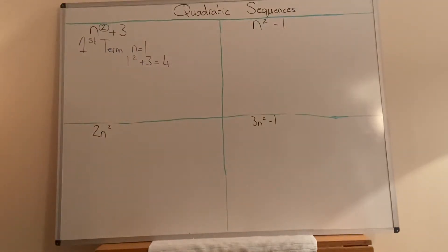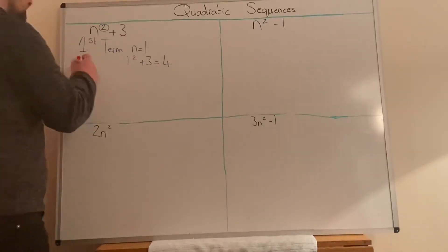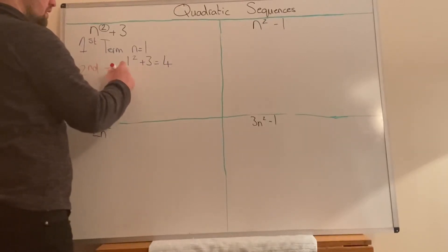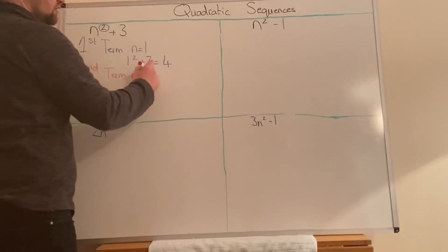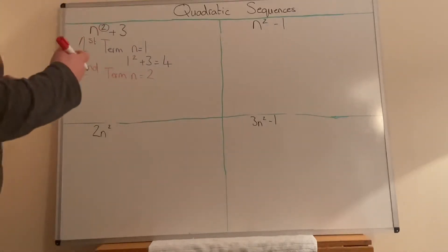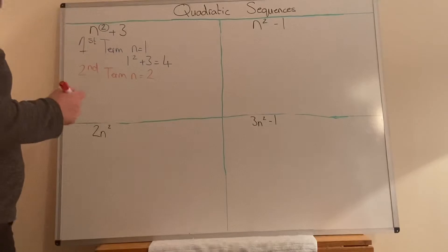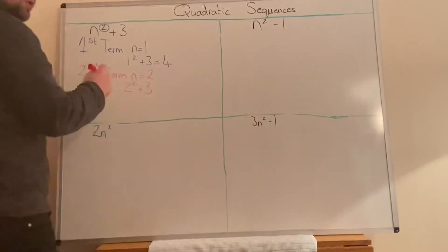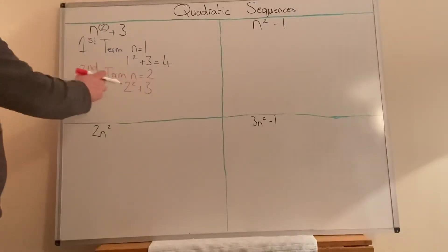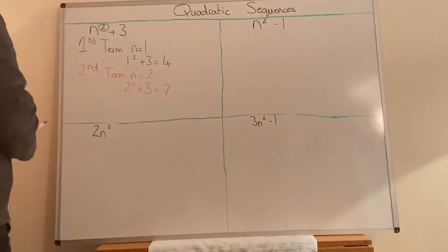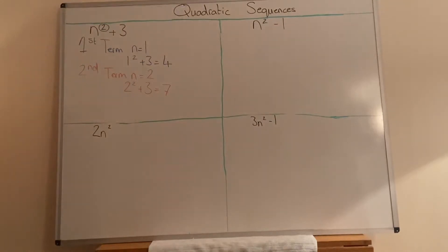Let's have a look at the next term in the sequence. The second term — n equals 2. So, we're going to take out every n that we've got and we're going to put in 2 in its place. We're going to substitute it — take n off and put something on in its place. What we end up with is 2 squared plus 3. Now, 2 squared means 2 times 2. 2 times 2 is 4, plus 3 is 7. So, the second term of the sequence is 7.